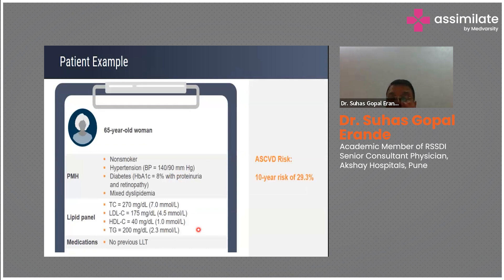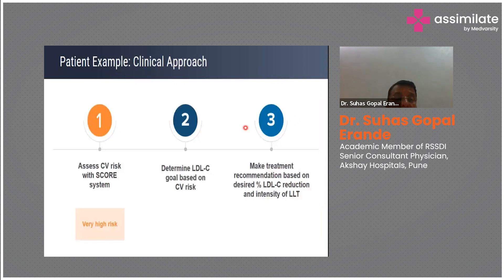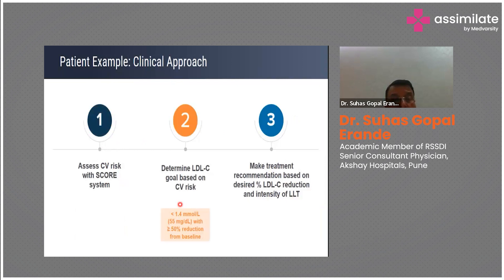Calculating the ASCVD risk for this lady gives a 10-year risk of 29.3%, which is very high. Her risk category is very high, so the LDL goal is less than 55 mg/dL. We need to bring her LDL from 175 down to less than 55. We have assessed the CV risk and determined the target.